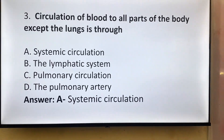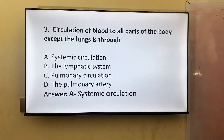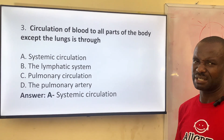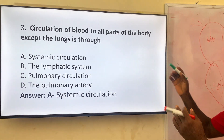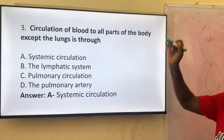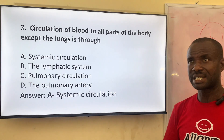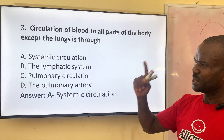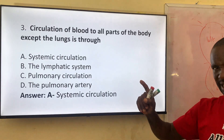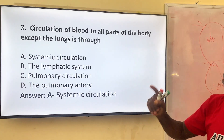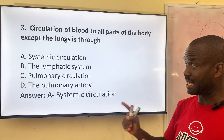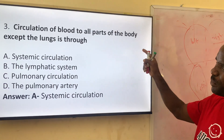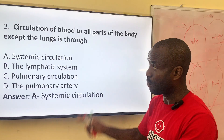Number three: circulation of blood to all parts of the body except the lung. We said circulation is of two types: blood pumping through the heart to the lung and back to the heart is one type. Then another is pumping from the heart to all parts of the body except the lung. So today we want to know — the circulation of blood to all parts of the body except the lung is called what?